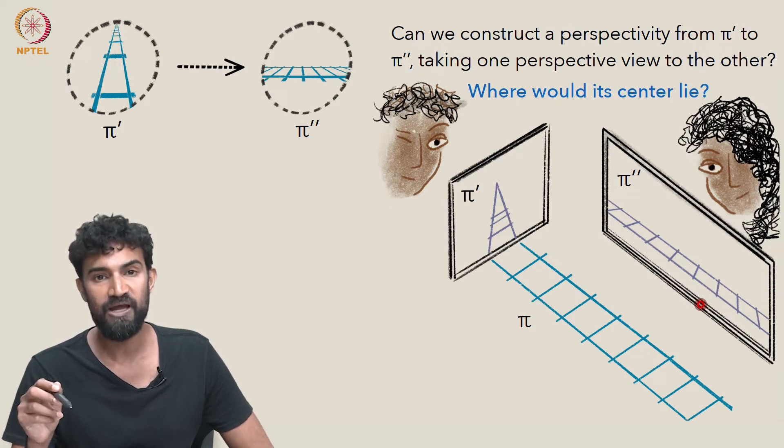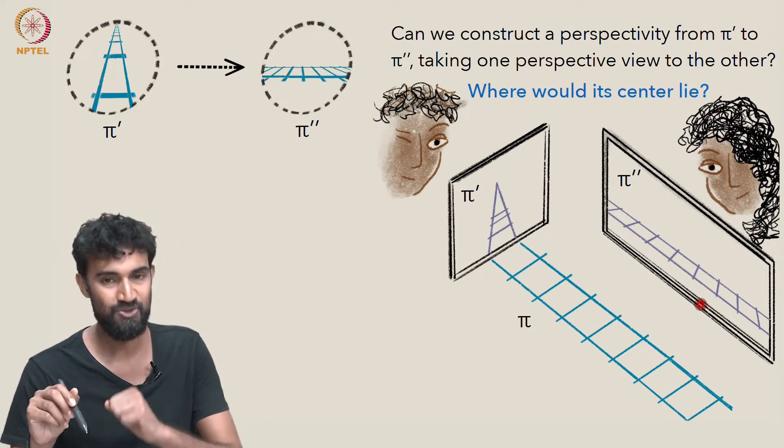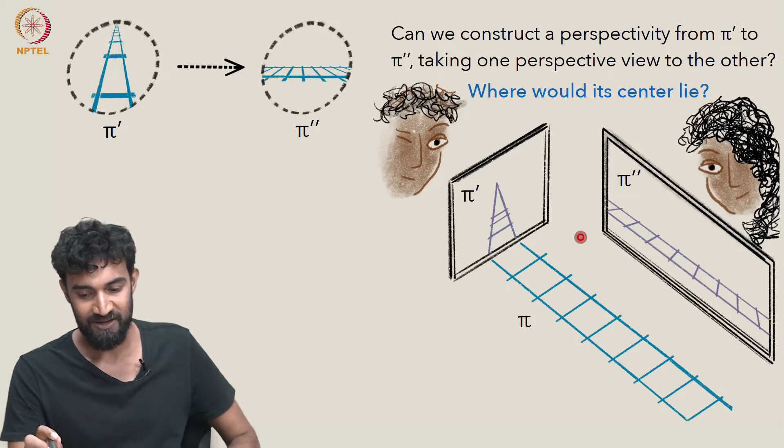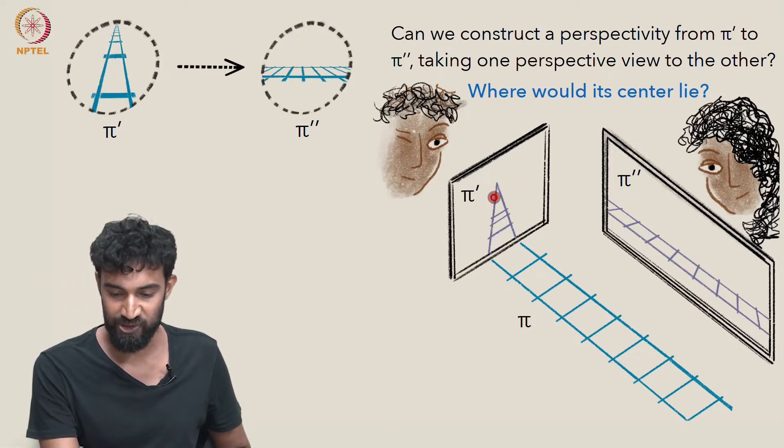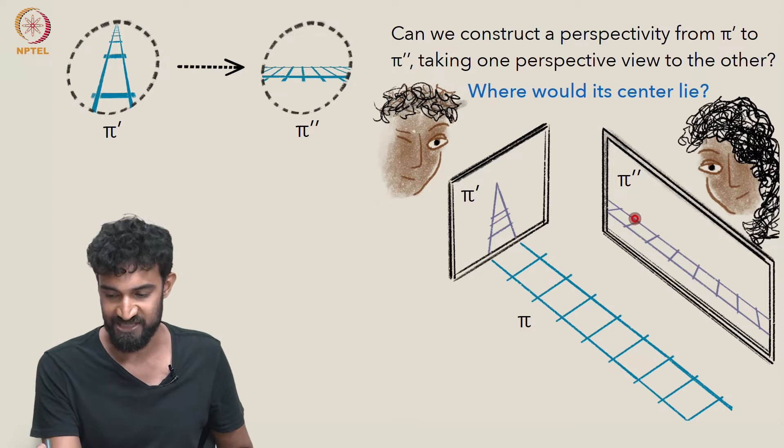And in particular, where would its center of perspectivity lie? We have to choose a specific center point in space that will relate points in this image here to points in this image here.